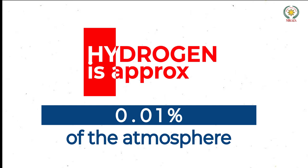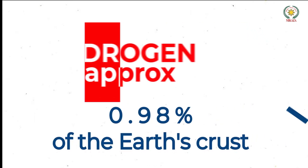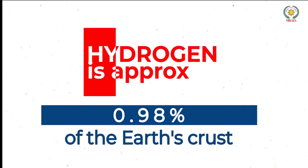Then we talk about earth's crust. Earth's crust is made up of only 0.98 percent of hydrogen.